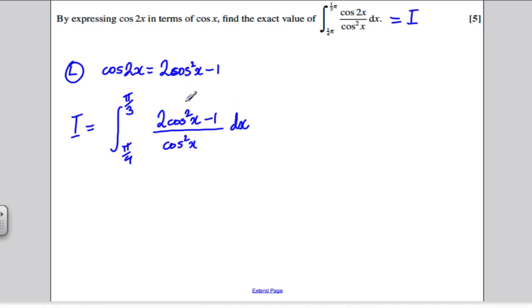Now, the numerator is a subtraction, so we can divide each component of the numerator by the denominator. This integral would, therefore, be the integral between pi by 3 and pi by 4.